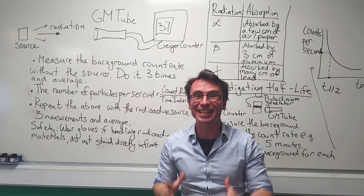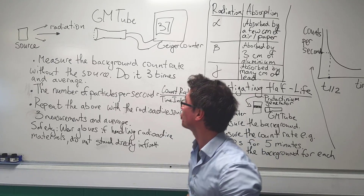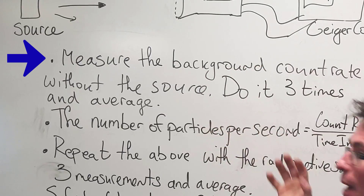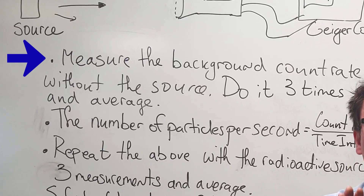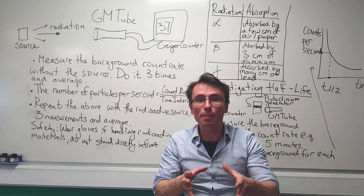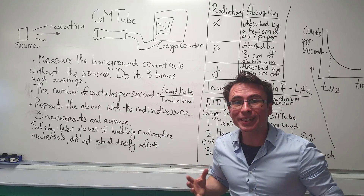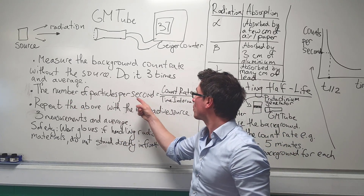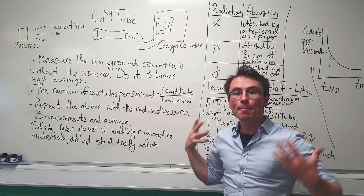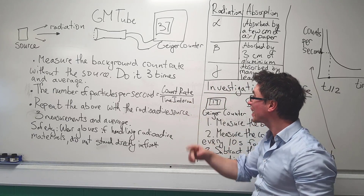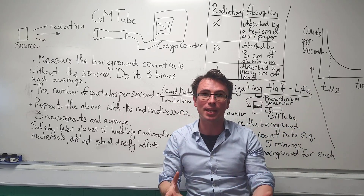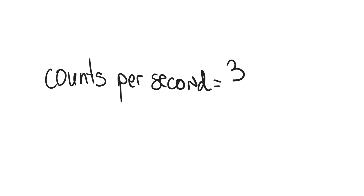In all experiments in radioactivity, the first thing we need to do is measure the background count rate without the source. To improve our precision, we're going to measure this three times and then take an average. We can calculate the number of particles per second by measuring our count rate and dividing by the time interval. For instance, if we've had 37 particles in 10 seconds, then our background rate would be 3.7.